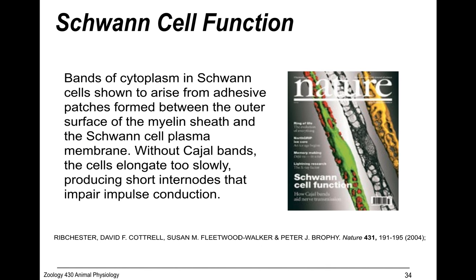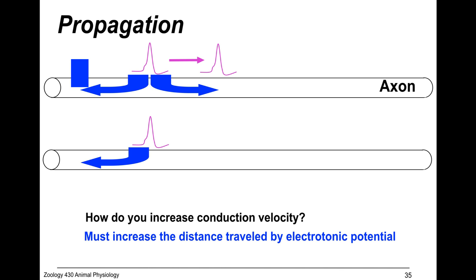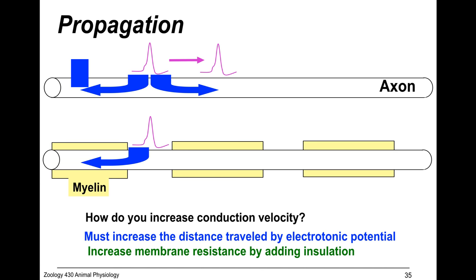There was an article in 2004 about Schwann cell function. They form adhesive patches between the outer surface of the myelin sheath and the Schwann cell plasma membrane, making these Cajal bands. Without those Cajal bands, cells elongate too slowly, resulting in really short internodes, which impairs impulse conduction. This tells us that those internodes have to be at an optimal distance in order to maximize conduction.